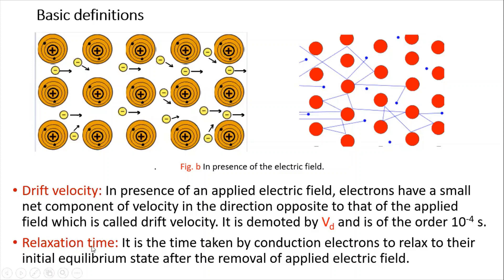Now, relaxation time: it is the time taken by conduction electrons to relax to their initial equilibrium state after the removal of the applied electric field. When the field is applied, all electrons drift in one direction. But when the applied field is removed, the electrons stop drifting and come back to their original random orientation. The time taken by the free electrons to lose their drift velocity and return to random motion is called relaxation time.